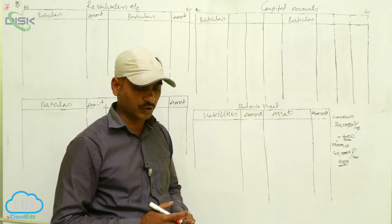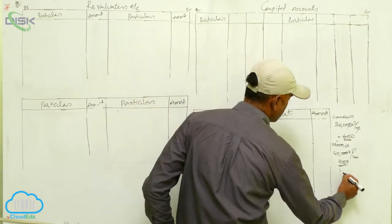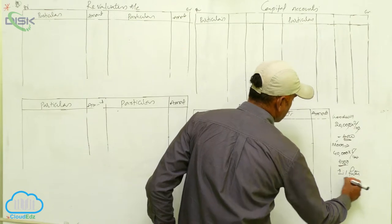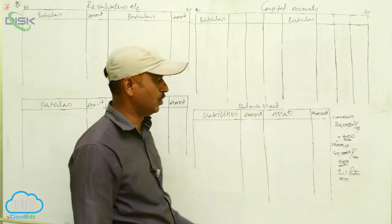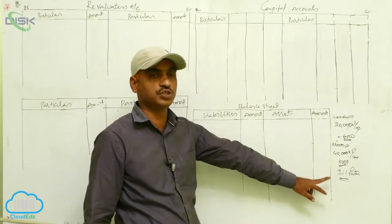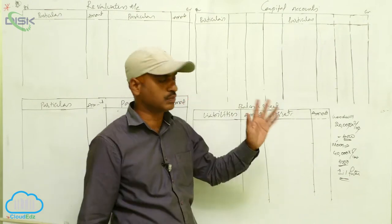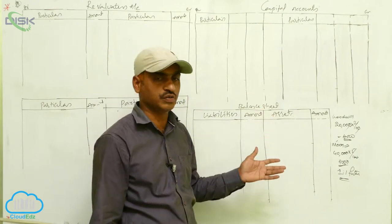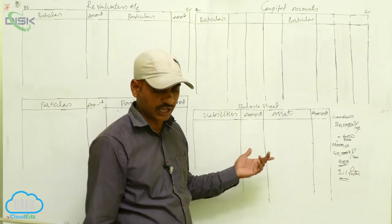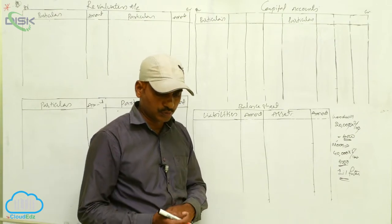Star and Sun will share future profits equally, so their future profit ratio is 1:1. Using the old ratio and new ratio, we ascertain the gaining ratio. Gaining ratio is new ratio minus old ratio.